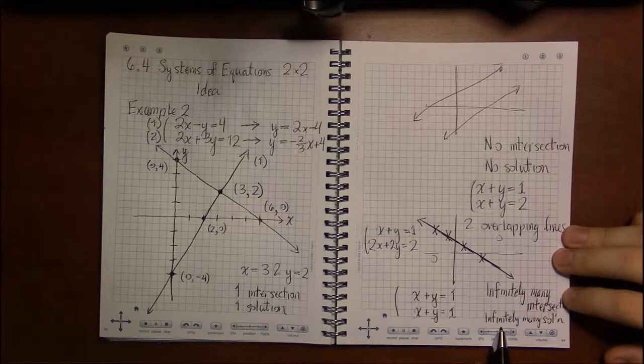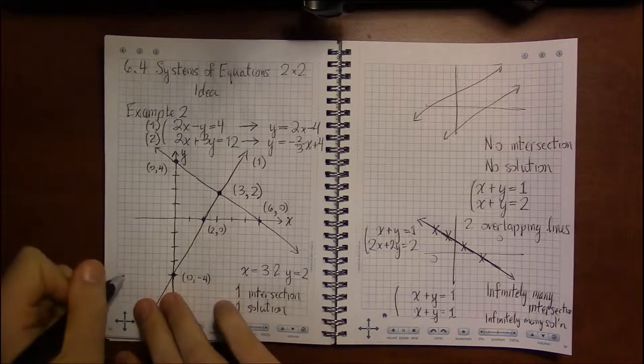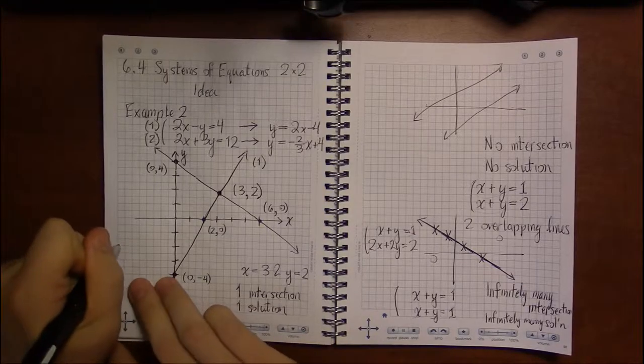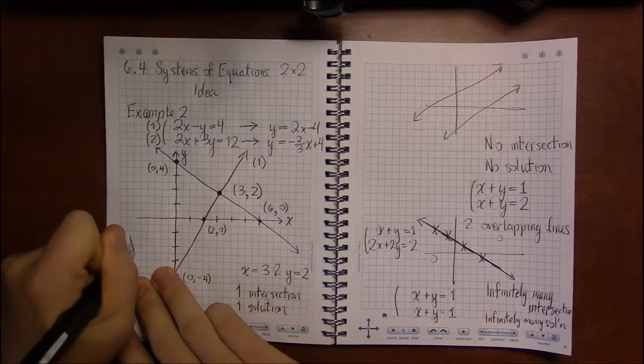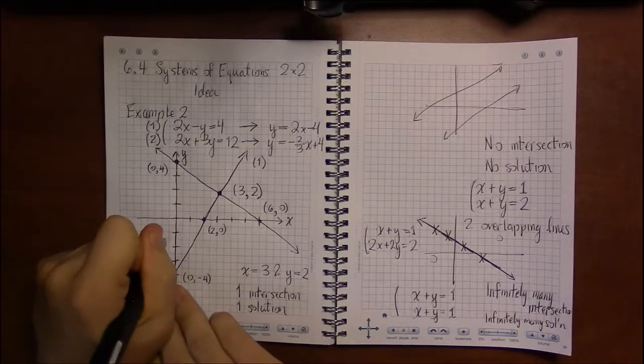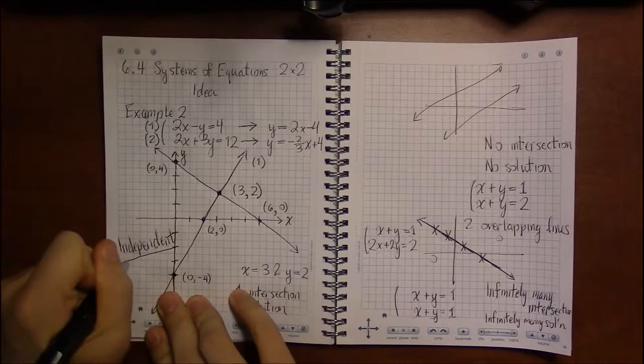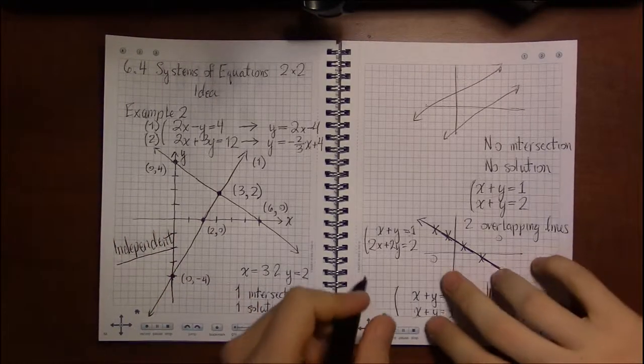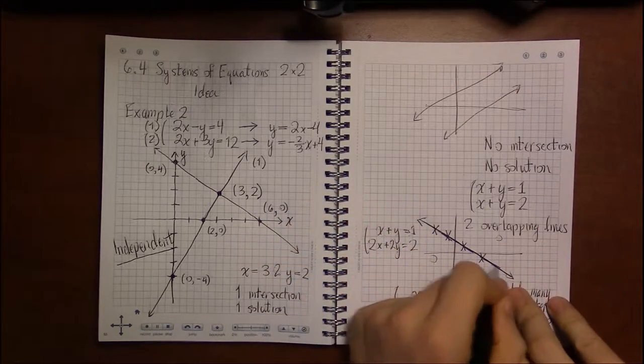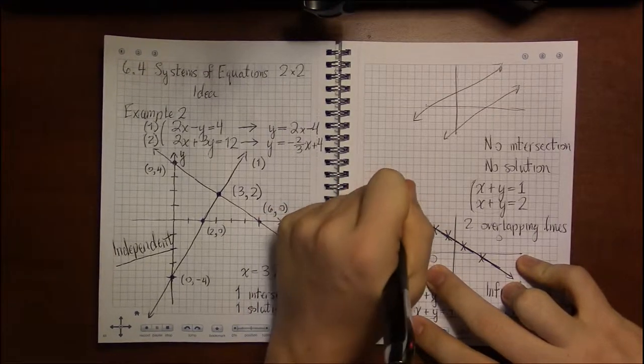And the name we give these is that this system here we call independent. That might make a bit more sense if we give a name to this rather weird scenario of the two lines sitting on top of one another. We call this dependent.